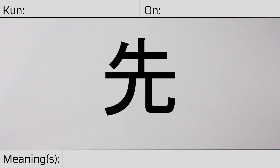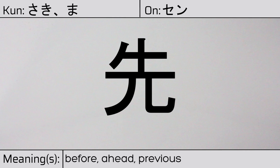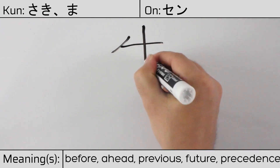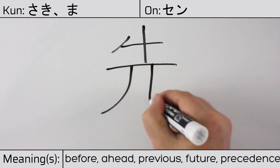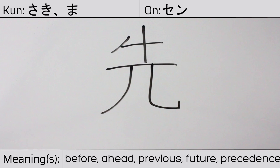Welcome to this lesson on Japanese kanji. Today, we'll be discussing this character. This kanji has kunyomi or Japanese readings of saki or ma, and it has an onyomi or Chinese reading of sen. This character has the meanings before, ahead, previous, future, or precedence. Here is the stroke order.